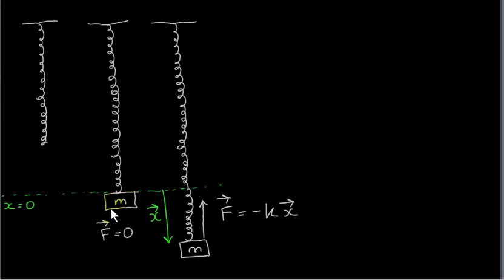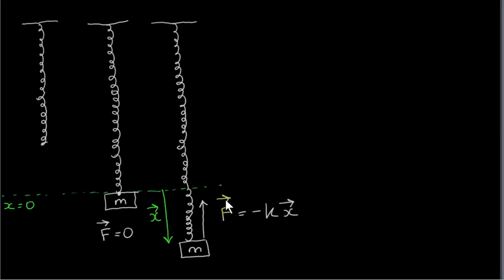In the last video, we looked at a mass on a spring. In the first case, we considered the situation when the mass is in equilibrium, which means that the resultant force F on it is equal to zero, and the position of the mass is x equals zero. Then we saw that if the mass is displaced from its equilibrium position by vector x, then the force on the mass is a negative constant times the displacement vector x, which means that the resultant force is in a direction opposite to x.